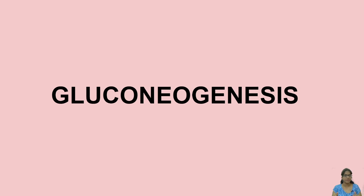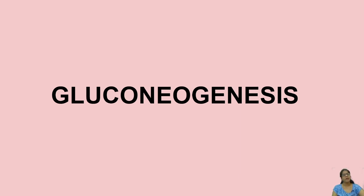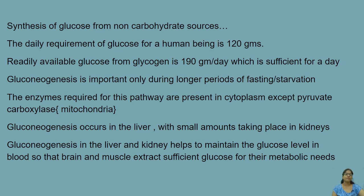What happens during starvation? You all know that glucose levels in the body would be reduced because there is no consumption of food. Gluconeogenesis is the production of new glucose from non-carbohydrate precursors. Generally carbohydrates are broken down for glucose, but here I'm talking about non-carbohydrate sources.